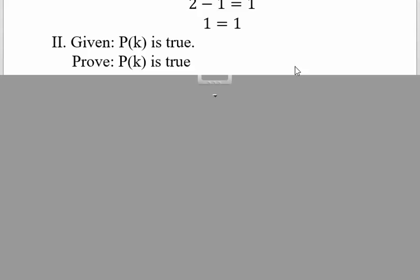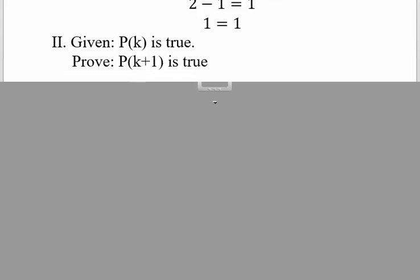Now we're ready for part 2, Roman numeral 2. This is a mini proof—a direct proof in fact inside the bigger proof. In Roman numeral 2, I'm given that P(k) is true. Statement k is true and I want to establish that statement P(k+1) is true. This is the format for all math induction proofs.